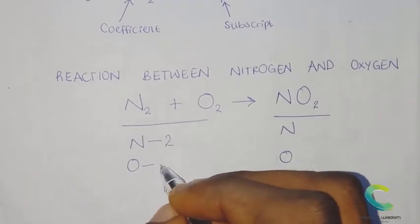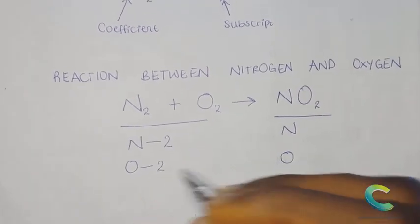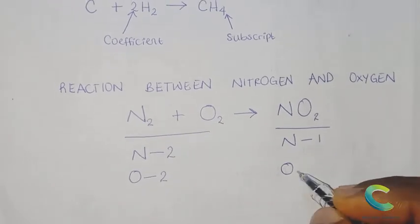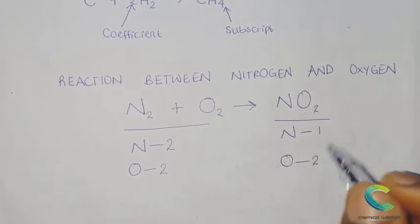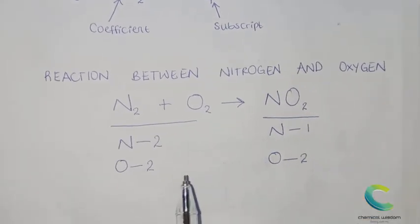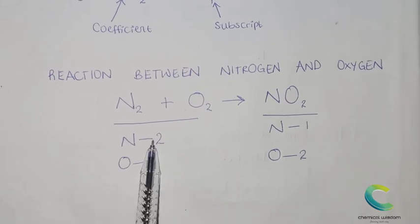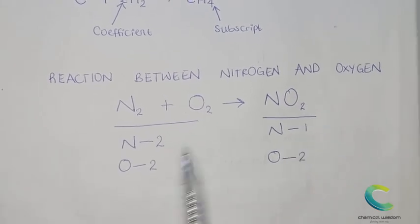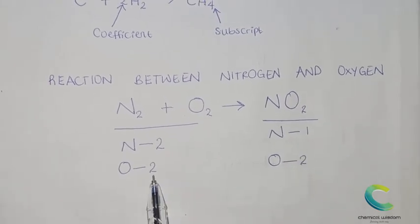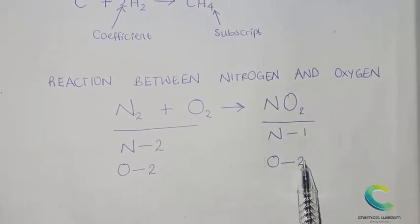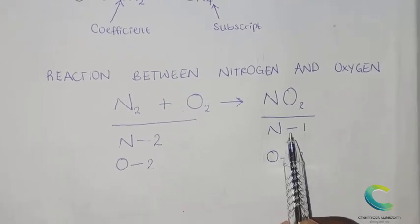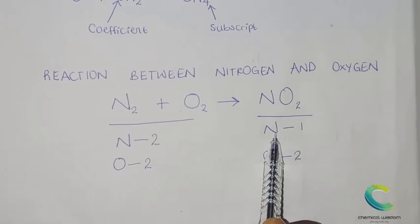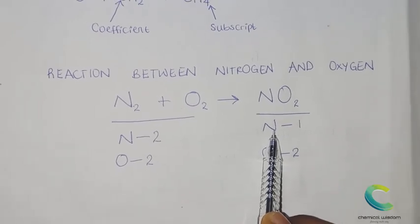Step two says compare the atoms on both sides. On the left we have two nitrogen atoms and two oxygen atoms. On the right-hand side we have only one nitrogen atom and two oxygen atoms. The equation is not balanced — we have two nitrogen on the left and one nitrogen on the right, while oxygen is two on both sides.